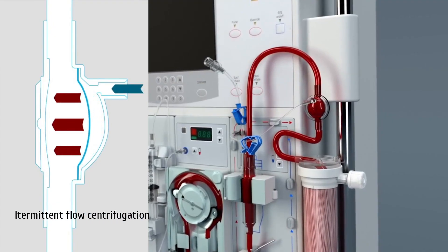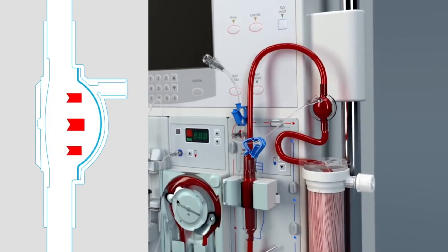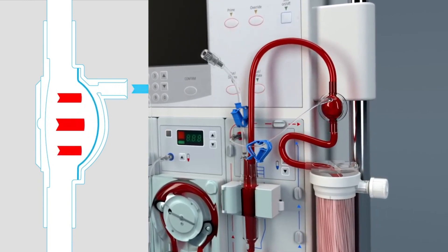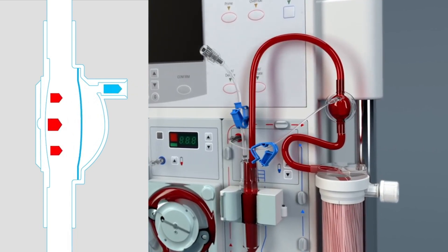The second method is intermittent flow centrifugation. Intermittent flow centrifugation works in cycles, taking blood, spinning and processing it, then giving back the unused parts to the donor in a bolus. The main advantage is the single venipuncture site.